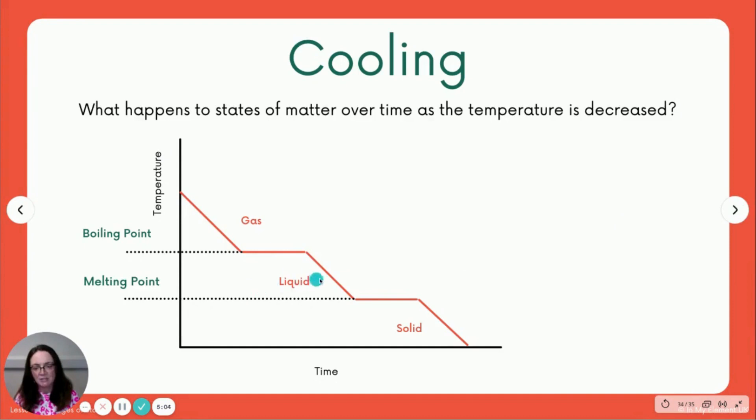And then to turn from a liquid to a solid, complete the change of state, we have to reach the melting point. Now it's worth saying here when we're reaching this boiling point, this gas is condensing, turning from a gas to a liquid. And then when we reach the melting point, this liquid is freezing and it is becoming a solid.